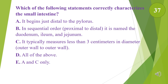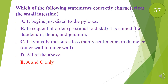Which of the following statements correctly characterizes the small intestine? A. It begins just distal to the pylorus. B. In sequential order proximal to distal, it is named the duodenum, ileum, and jejunum. C. It typically measures less than 3 cm in diameter outer wall to outer wall. D. All of the above. E. A and C only. The answer is E, A and C only — cannot be B because the correct sequential order is duodenum, jejunum, and then ileum.